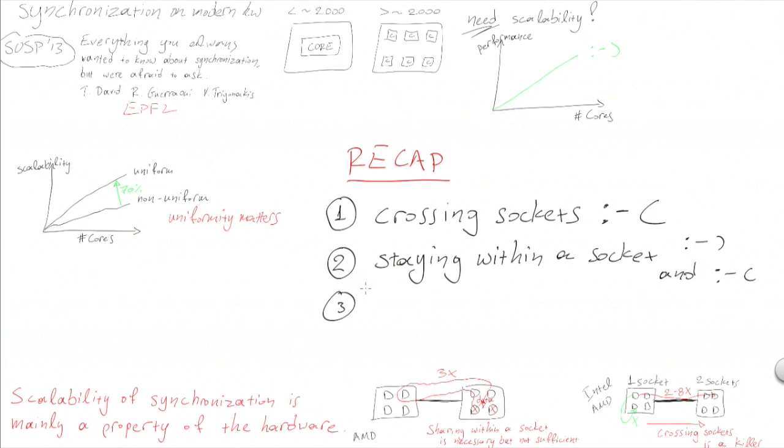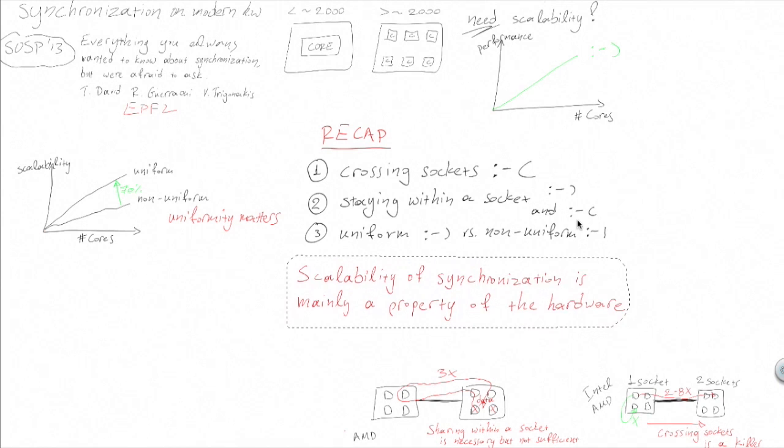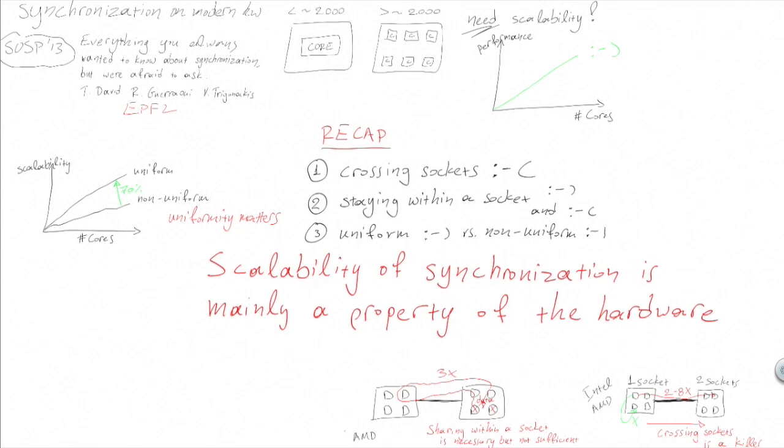Finally, we noticed that even on single socket many-cores, the characteristics of the hardware determine at large the scalability of synchronization. The big picture out of these results is that the scalability of synchronization is mainly a property of the underlying hardware.